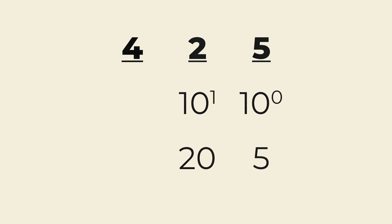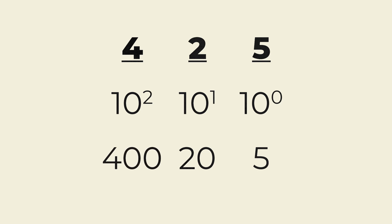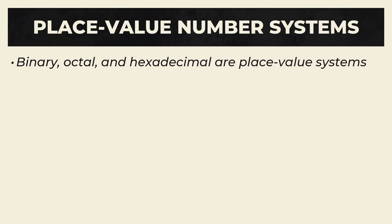2 times 10 is 20, and 20 gets added to the total. Finally, 4 is in the 100 spot, because the third power of 10 is 10 squared, which is 100. 4 times 100 is 400, and that gets added to the total, and so on. Binary, octal, and hexadecimal use this system as well.